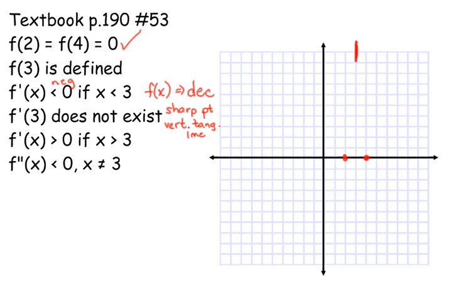Then it says f prime of x is greater than 0 if x is greater than 3. Greater than 0 means positive, and if the derivative is positive, that means the original function is increasing. And then they tell me one more thing: the second derivative is less than 0 — that's negative. What does a negative second derivative tell us about the original function? Concave down. If x is not equal to 3, that means everywhere but at 3 our function is concave down. The reason it says everywhere but 3 is because the derivative at 3 doesn't exist, so the second derivative can't exist there either.